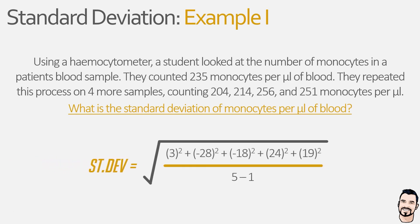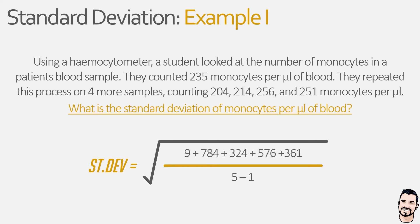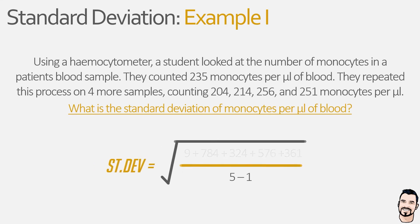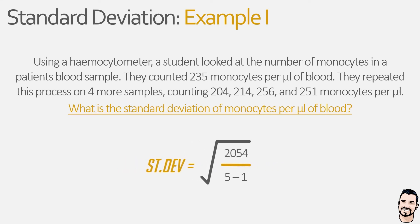This still has some work to do. Our next step is to continue simplifying the top line of the equation, which also removes any negative values, so that we are left with a number of positive values which can now be added together, giving us a value of 2054. Next, we simplify the bottom line of the equation, so 5 minus 1 is 4, allowing us to divide 2054 by 4, giving us 513.5.